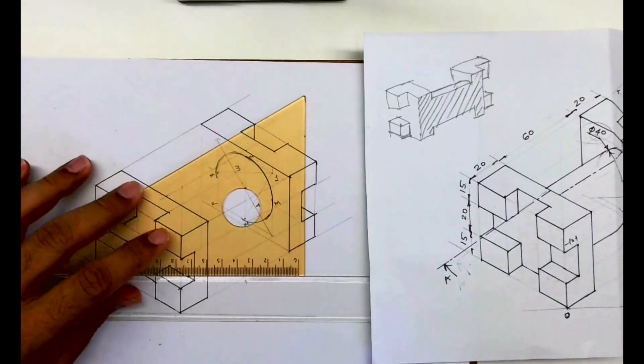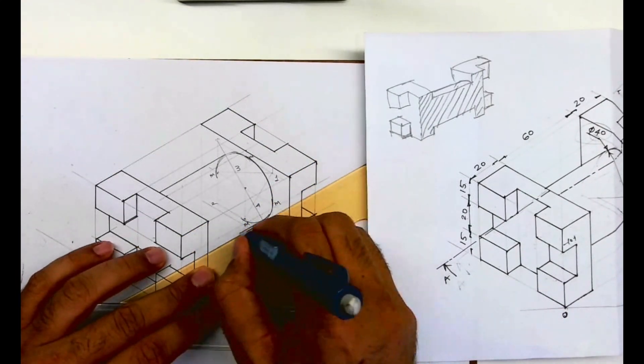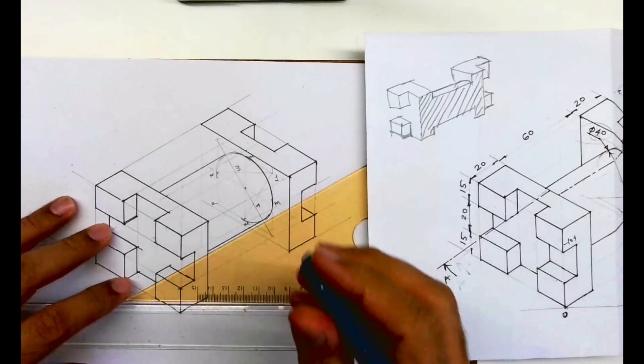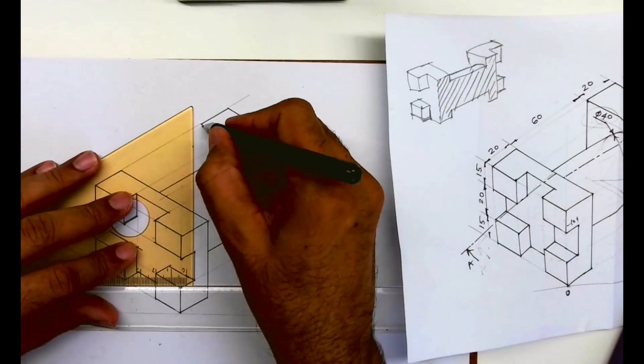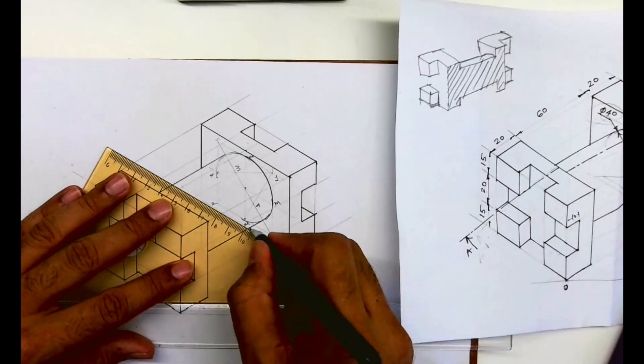I hope everyone understood how to draw isometric copy of this. We are done with the isometric copy. Thank you.